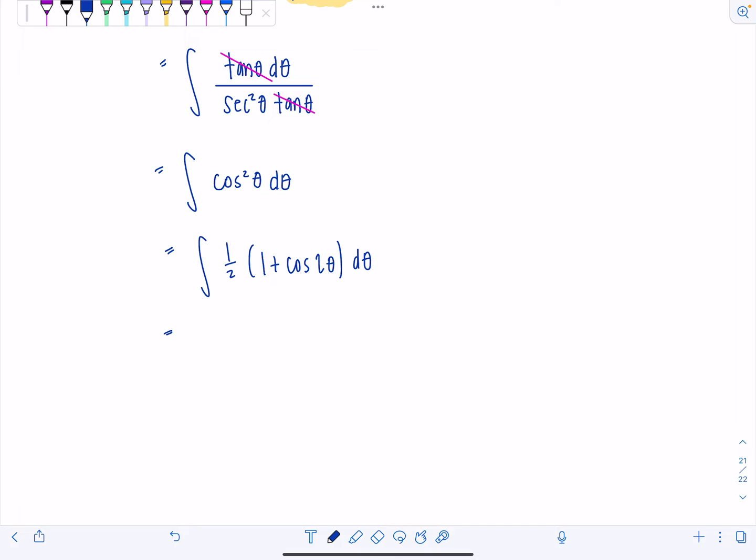Beautiful. And then we can just anti-differentiate term by term. I'll take the one half out. Antiderivative of one is just theta. And then antiderivative of cosine two theta would be one half sine two theta. And then I have plus c out here.